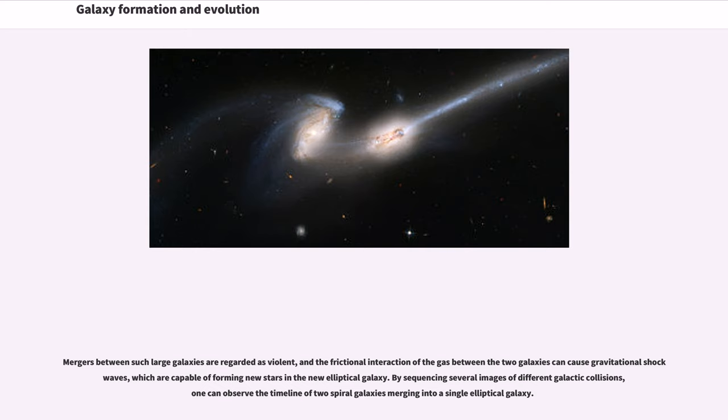Mergers between such large galaxies are regarded as violent, and the frictional interaction of the gas between the two galaxies can cause gravitational shock waves, which are capable of forming new stars in the new elliptical galaxy. By sequencing several images of different galactic collisions, one can observe the timeline of two spiral galaxies merging into a single elliptical galaxy.